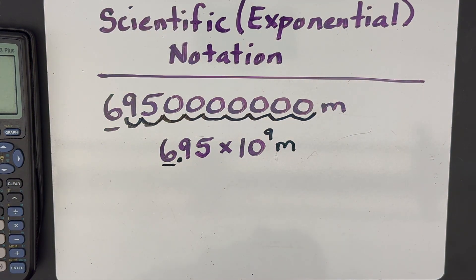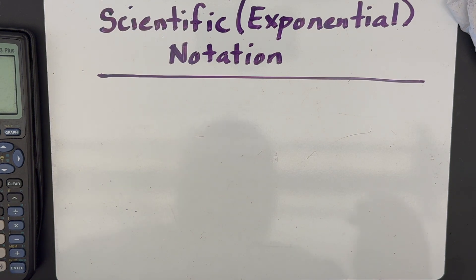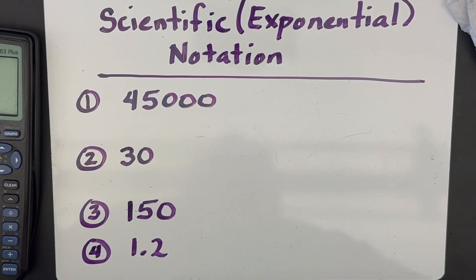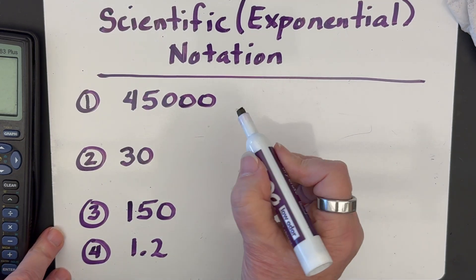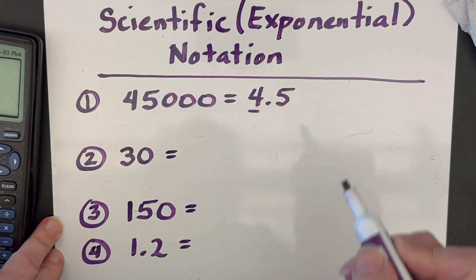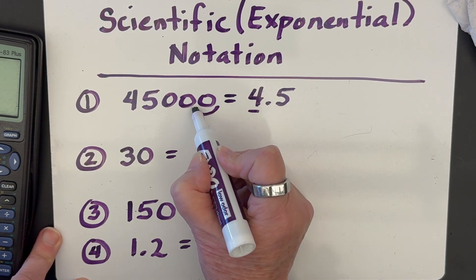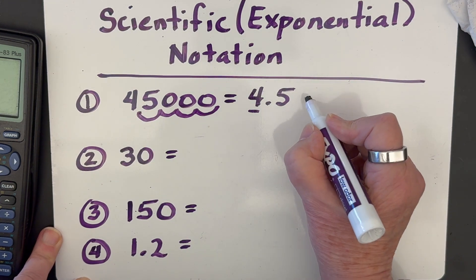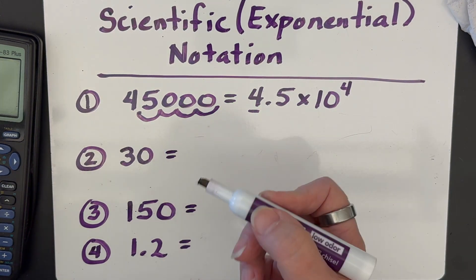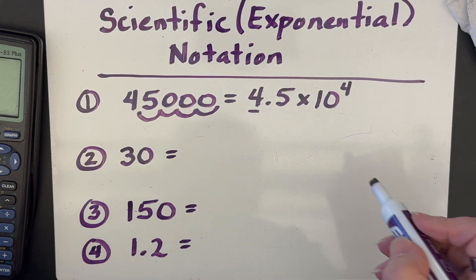Let's try a couple of practice problems. You can pause the video here if you'd like to work them out on your own, then hit play to check your answers. Here are four numbers to put into scientific notation. For the first one, we get 4.5 — only one digit to the left of the decimal — and we count how many places we moved it: one, two, three, four places. So it's 4.5 times ten to the fourth power. If there's a unit like liters or kilometers, put it at the very end after the exponent.